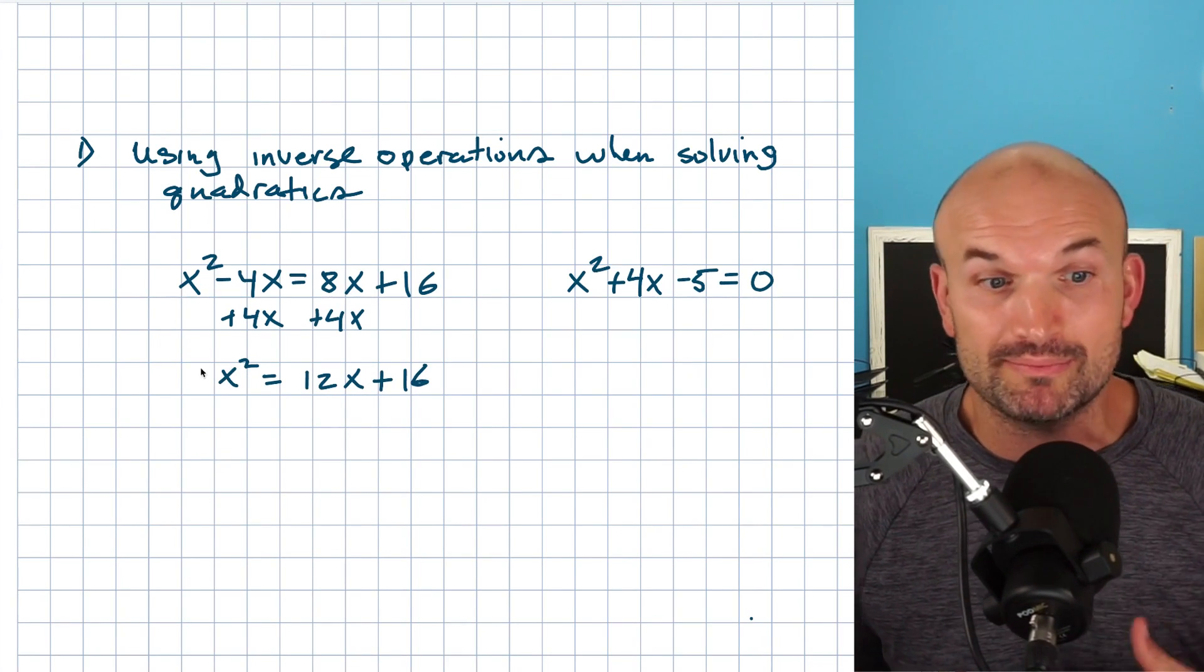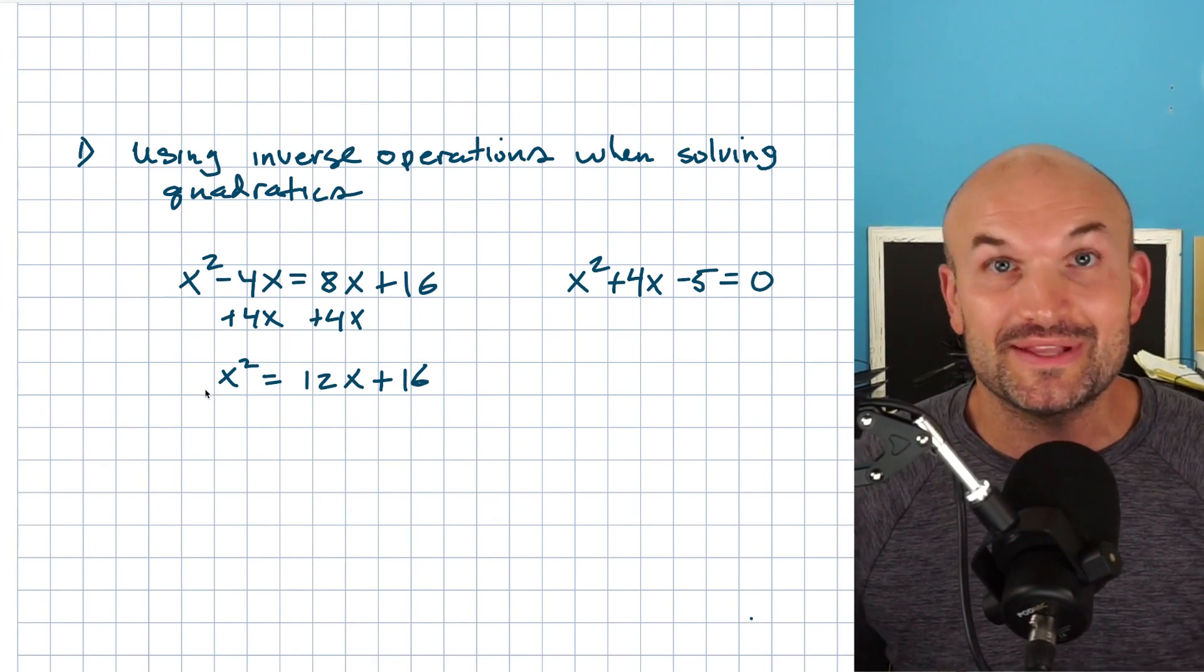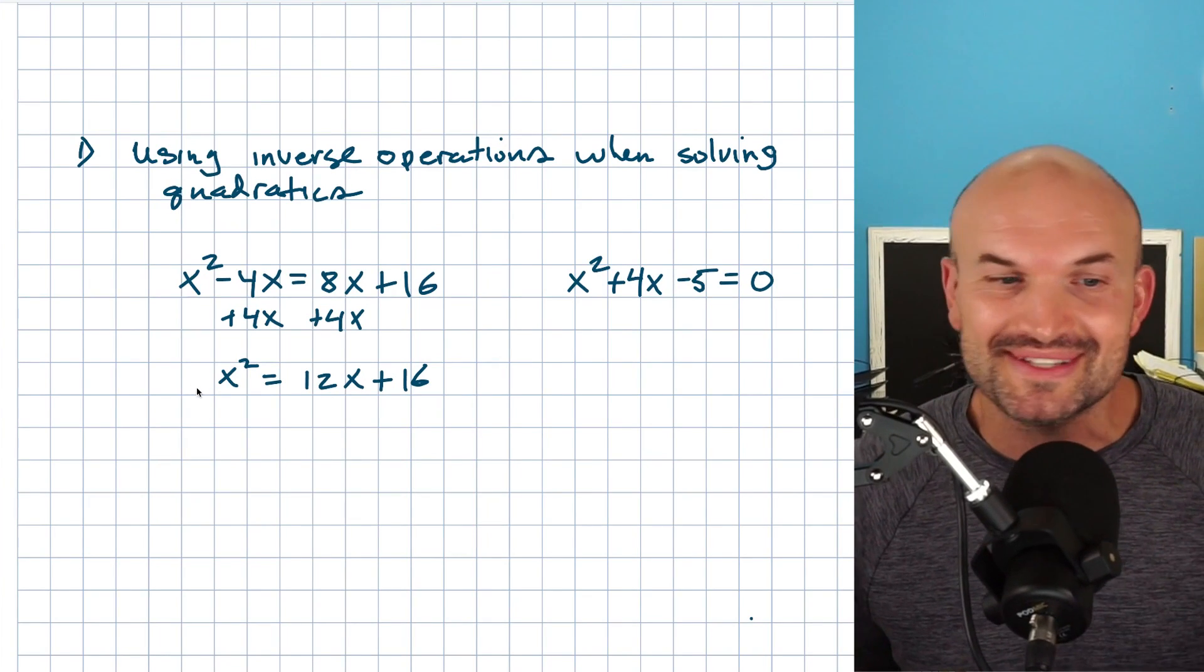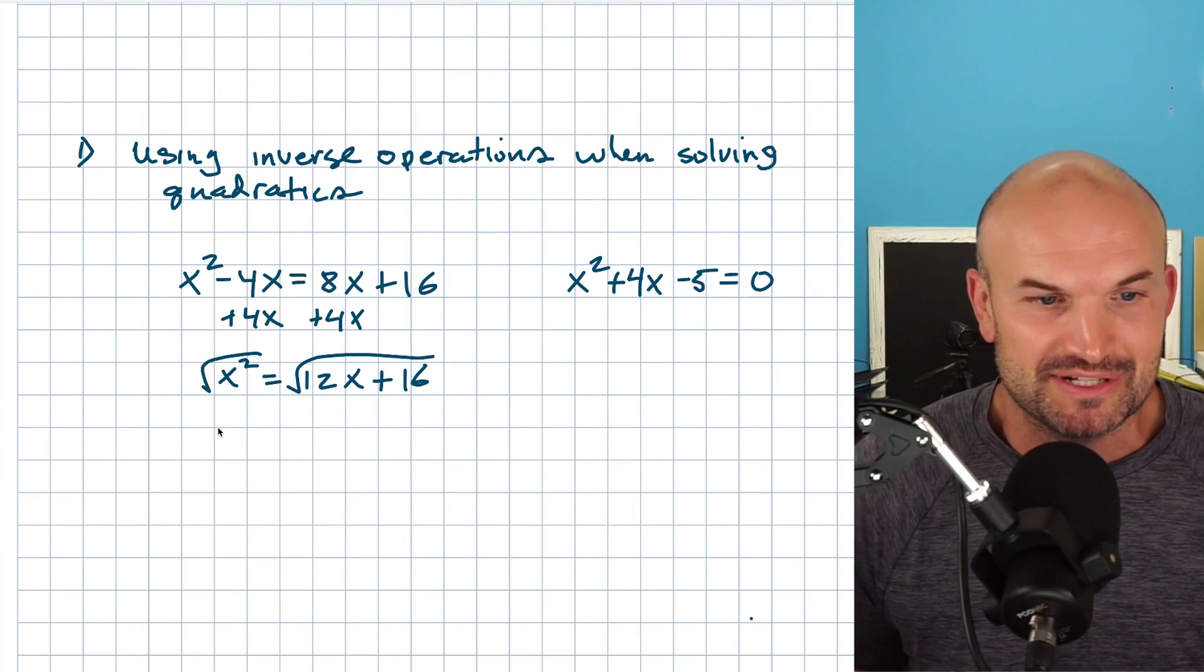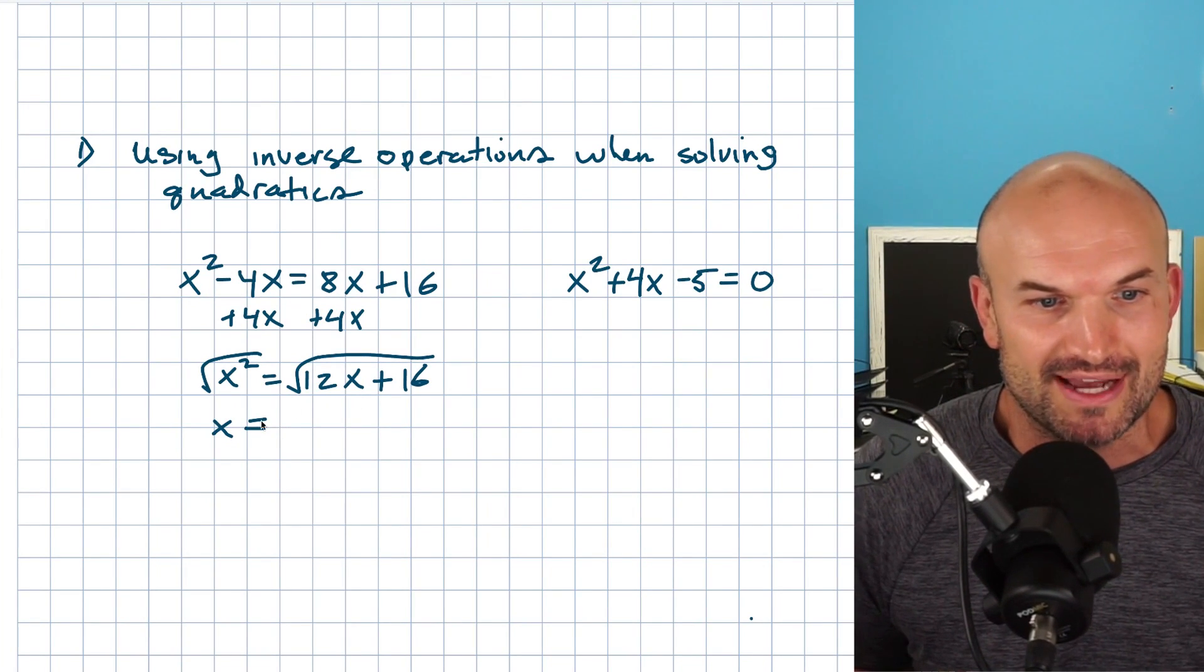And then to get rid of the square root, this is what we previously did, and that was wrong. That was only when there was one X. But again, when we previously did this, we took the square root to both sides. And then I'm just making some things up that are going to be incorrect because